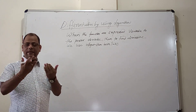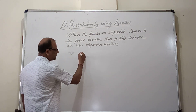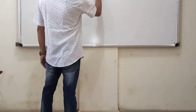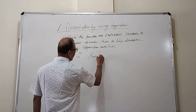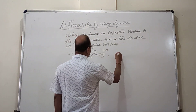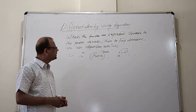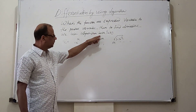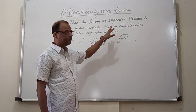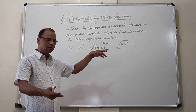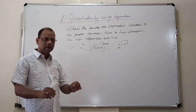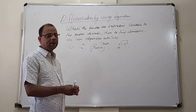For example, x to the power x — here x is the variable and the power is also variable. Another example: x to the power (1 minus x squared), or similar forms. When the function is expressed in variable-to-the-power-variable form, we use logarithm on both sides because logarithm helps us find the derivative easily.